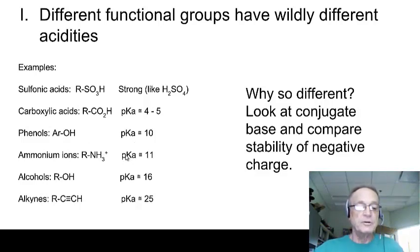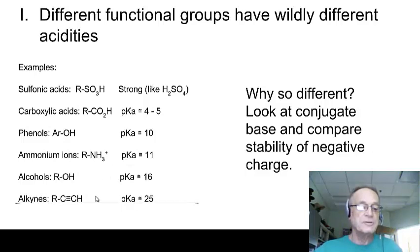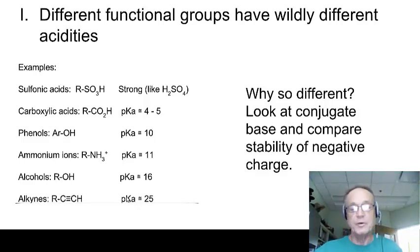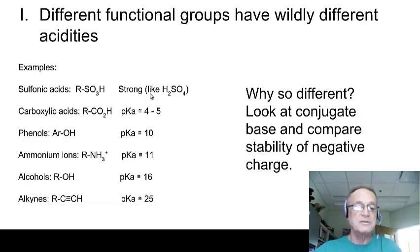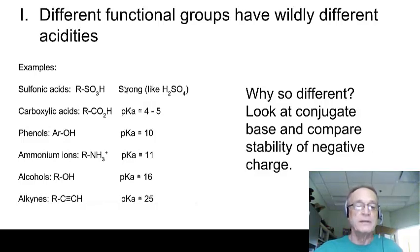Even weaker, and normally not even considered to be acids but can act as acids if the base is strong enough: alcohols, with a pKa of about 16, and alkynes — that hydrogen on the end of a triple bond — with a pKa of about 25, so obviously extremely weak acids. But if you have a strong enough base, it can react with alkynes. These are the main kinds of organic acids we'll be talking about, with wildly different strengths, everywhere from a strong acid to an extremely weak acid.